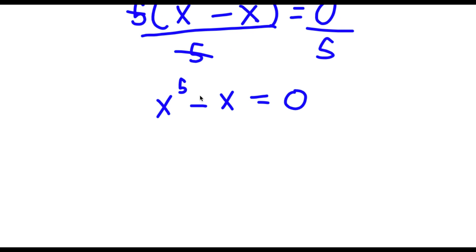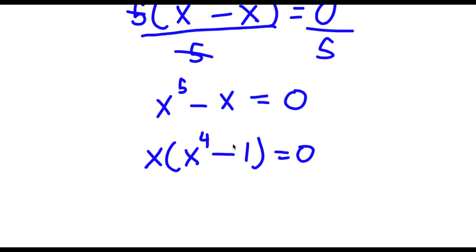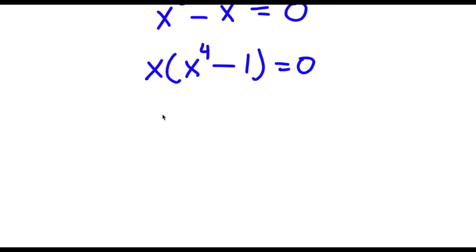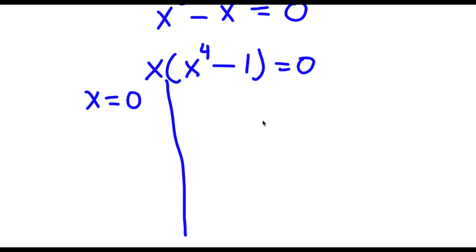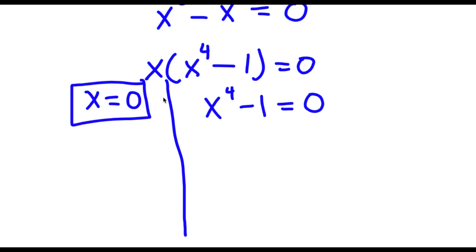From here, I can go ahead and factor out x. So if I factor out x, I get x times x to the power of 4 minus 1 is equal to 0. And now this gives me two equations. I have x is equal to 0, and I also have x to the power of 4 minus 1 is equal to 0. So x equals 0 is already a solution right here — we already have one solution to our original equation.